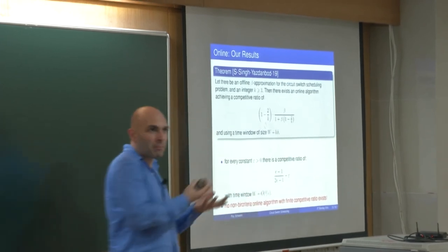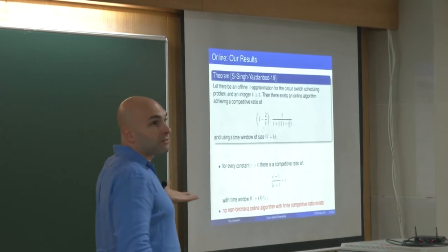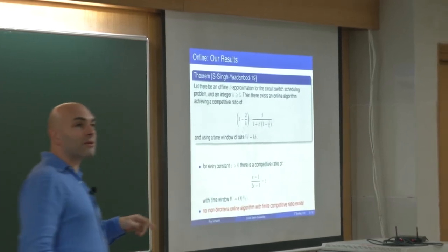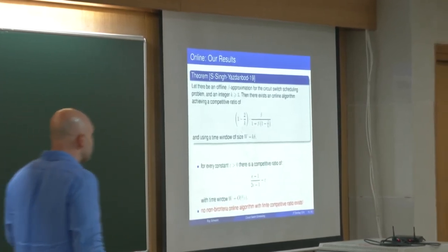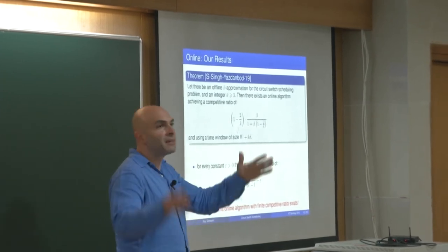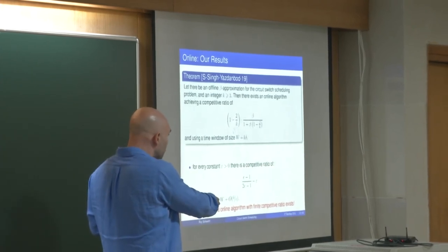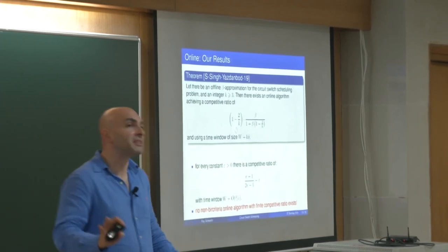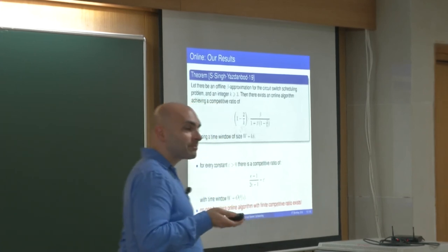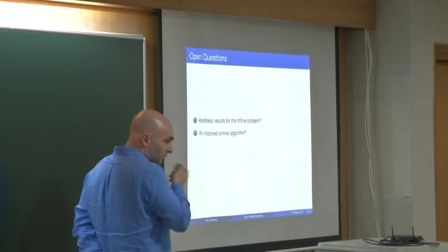This reduction runs in poly-time: if the offline beta-approximation runs in poly-time, you get a poly-time online algorithm. Plugging in our offline result gives a competitive ratio of roughly (e - 1)/(2e - 1) with some epsilon loss and a window deviation of order delta/epsilon. One can also show this deviation is unavoidable: there is no non-bi-criteria online algorithm with a finite competitive ratio. Any finite competitive ratio requires some deviation from the time window w.